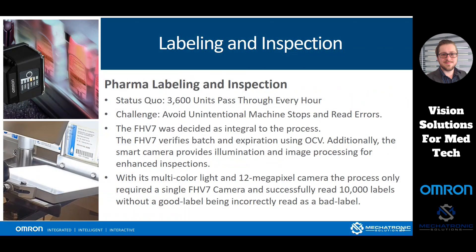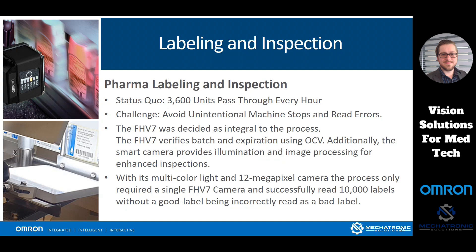A pharma case study: this was passing through 3,600 units every hour, being checked and verified for label inspection. The challenge was to avoid unintentional machine stops and read errors. We utilized the FHV-7 to verify the batch and expiration using optical code verification. The smart camera was able to provide both the lighting, lensing, and image processing for those enhanced inspections. Utilizing the multicolor lighting on the FHV-7 alongside the 12-megapixel high-resolution camera, we only needed a single FHV-7 camera to successfully read these labels without a good label being read incorrectly.